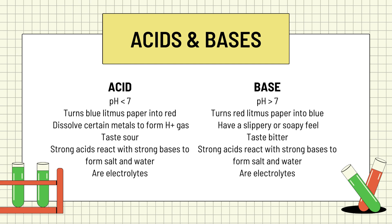Strong acids react with strong bases and they form salt and water. Whenever there's an equal amount of acid and base combined to form a substance or compound, the resulting product is typically a salt. Acids are also electrolytes by nature. Electrolytes refers to substances that are naturally acidic or basic or alkaline by nature. Electrolytes are those substances like sodium, potassium, and others that are essential for different living organisms and other matter.